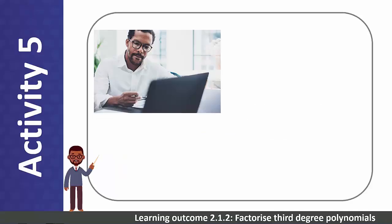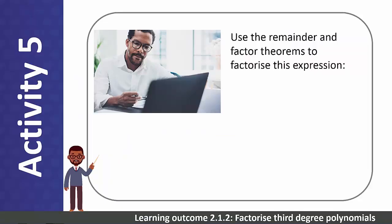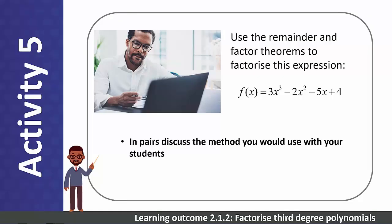Let's work on an example of factorizing third-degree polynomials in pairs. Use the factor and remainder theorem to factorize f(x) = 3x³ - 2x² - 5x + 4. Discuss the approach or method you would use in pairs and then work through the problem using this method.